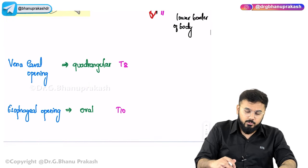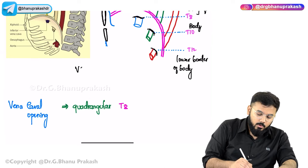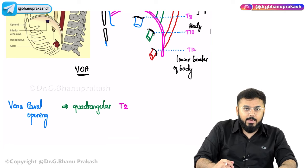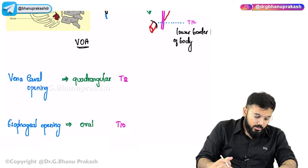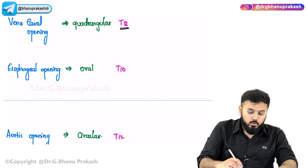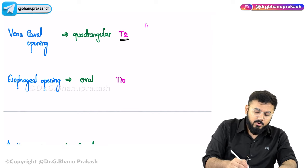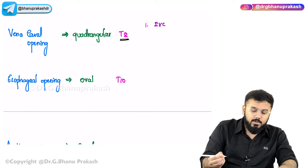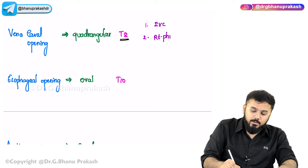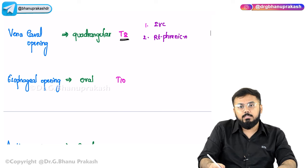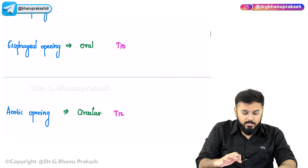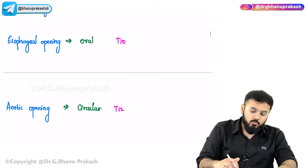You can remember the openings by the mnemonic VOA: V stands for Vena Caval opening, O for esophageal opening, and A for aortic opening. The Vena Caval opening is quadrangular and located at T8. Through it pass the inferior vena cava and the right phrenic nerve.